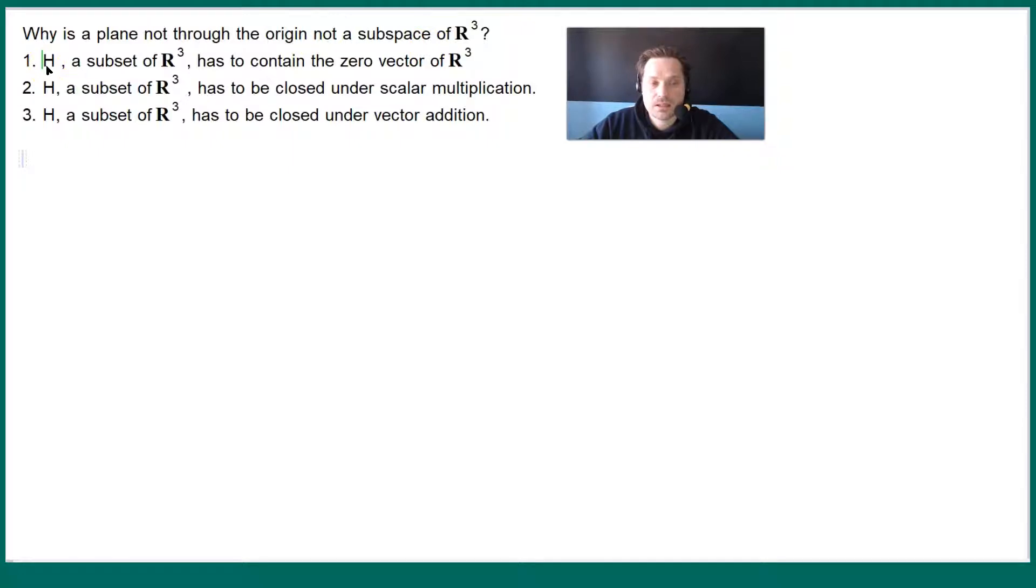These are the properties. So H, a set, has to contain the zero vector of R³. It has to be closed under scalar multiplication, and it has to be closed under vector addition.